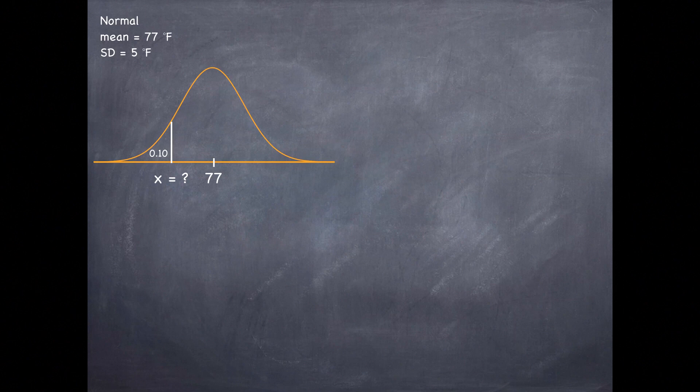In this case we're given a percentile and we're actually missing the observation. So we can work our way backwards, use the percentile to obtain a z-score, then solve for the unknown observation.